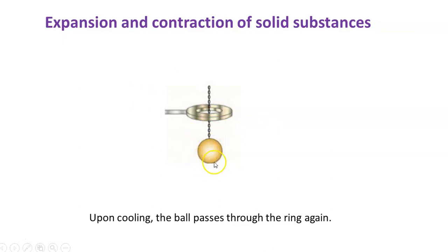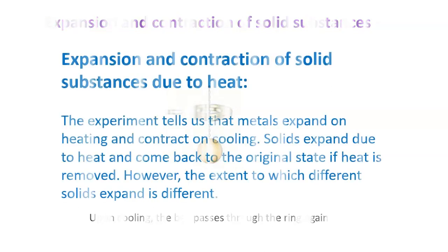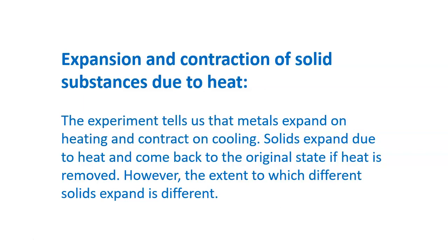Once the ball is cooled down, it passes through the ring again. This small activity proves that solid substances expand on heating and contract on cooling. Metals expand on heating and contract on cooling. Solids expand due to heat and come back to their original state if heat is removed. However, the extent to which different solids expand is different — iron, copper, and aluminium will not expand at the same rate.